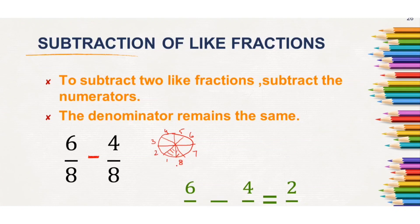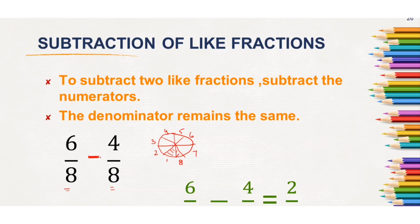Subtraction of like fractions. Here also, when it is like fractions, the denominator remains the same — you will only subtract the numerators. See here: 6 by 8 minus 4 by 8. It means out of 6 pieces, someone has eaten 2 pieces.